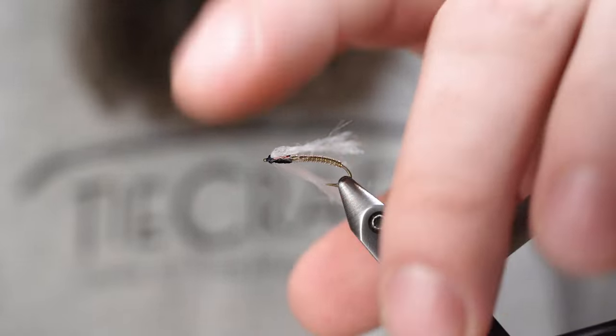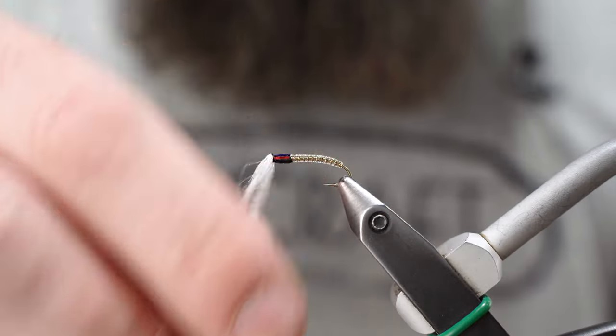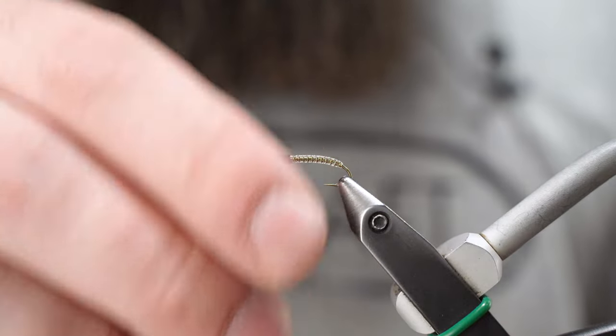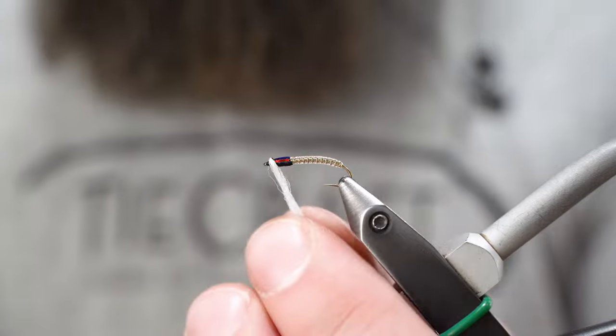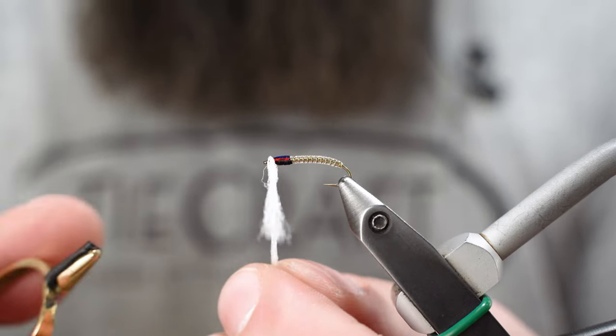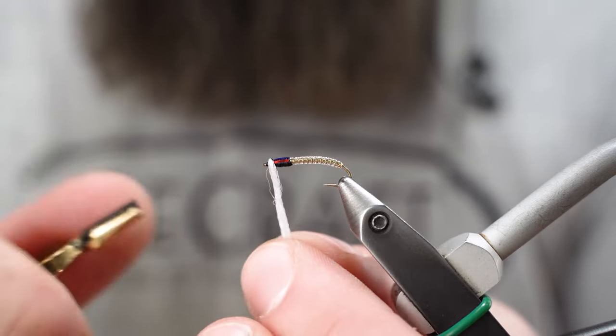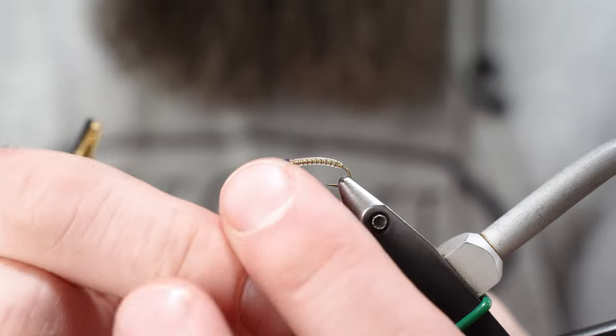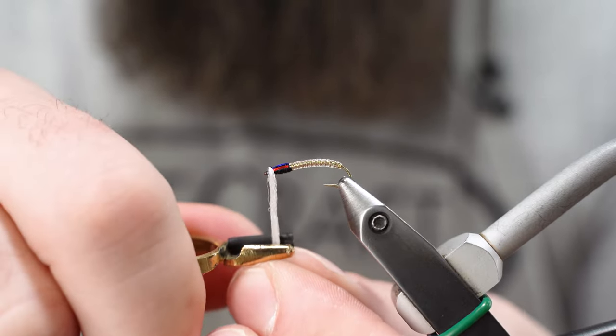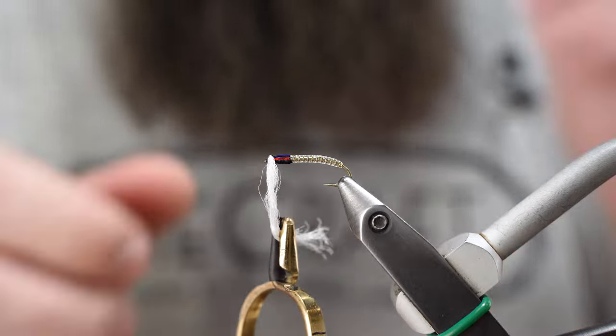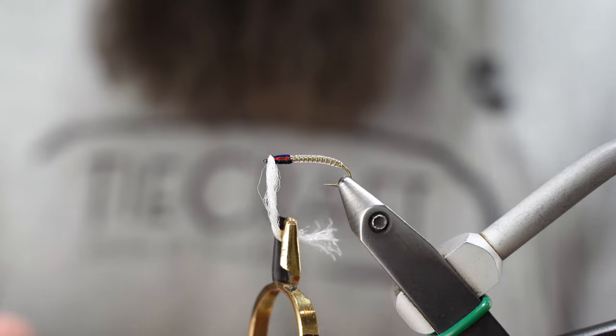Pull our thread tight and trim that out. Now instead of trimming these you could absolutely do that. What I'm going to do is take a hackle plier. I'm going to pinch these. Kind of keep them out of the way for this last step.